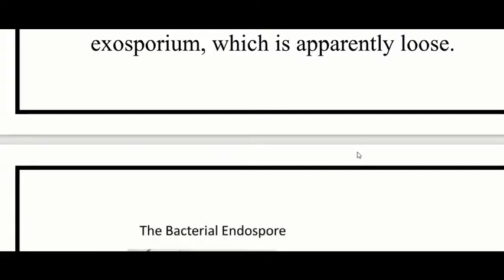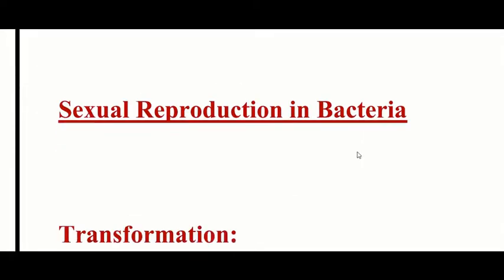The endospore layers include the inner membrane, then the cortex, outer membrane, spore coat, and in some species an exosporium. We will discuss this further in the next class. Thank you.